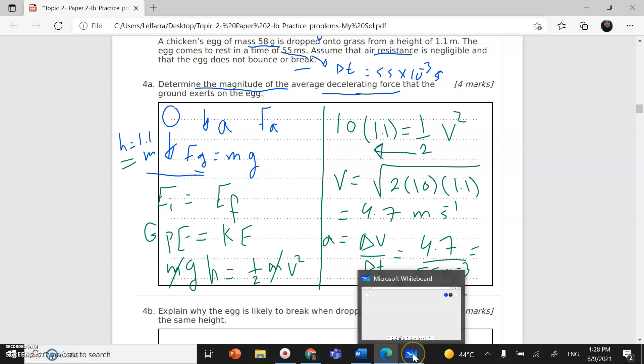Now we can continue here. I need to find the accelerating force downward. From Newton's second law, this equals mass times acceleration. Mass is 0.058, acceleration is 85, and this should give you 4.9 Newtons.